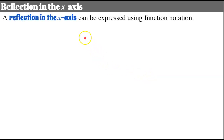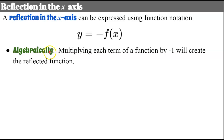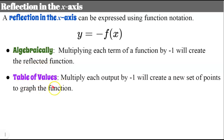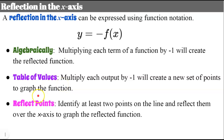Let's take a closer look at reflections in the x-axis. A reflection in the x-axis can be expressed using function notation as y equals negative f of x — there's an invisible negative one here. We're multiplying the output by negative one, and f of x is the same as y, our output. There are three ways to do this: algebraically by multiplying each term by negative one; using a table of values by multiplying each output by negative one; or by reflecting at least two identified points over the x-axis.